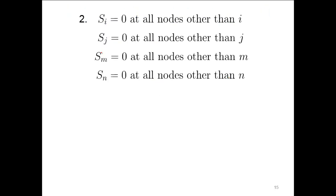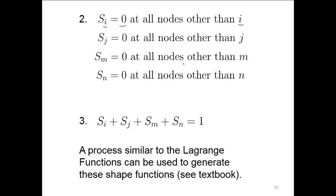The shape function at node i is equal to zero at all other nodes — j, m, and n. The same applies for each of the other three shape functions. Adding all shape functions together gives 1. All these properties are retained. A process similar to the Lagrange function used in the 1D case can be used to generate these shape functions, and sources are available in textbooks and online.